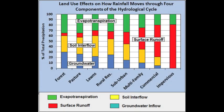As you can see in this figure, the amount of surface runoff in red increases dramatically when you convert from a forest on the far left to urban environments such as multifamily or commercial on the right.